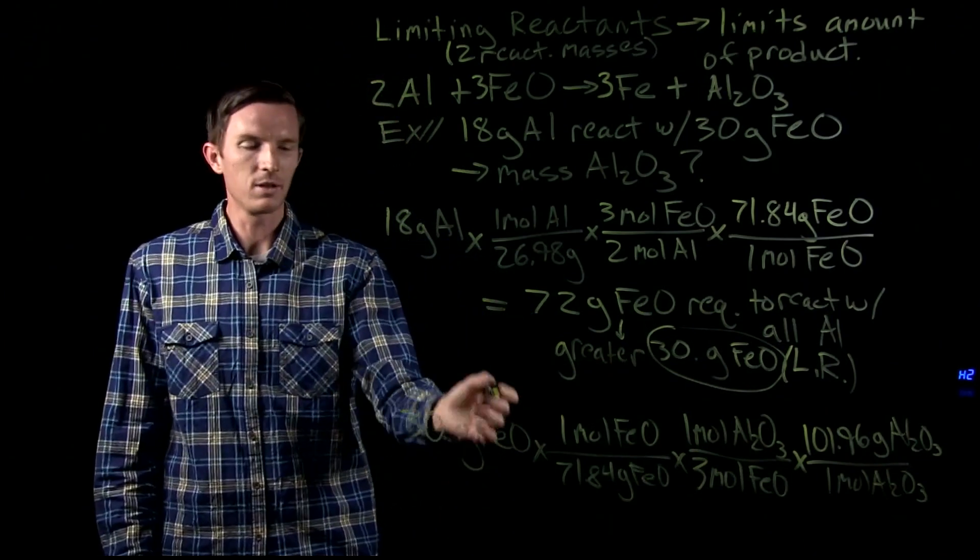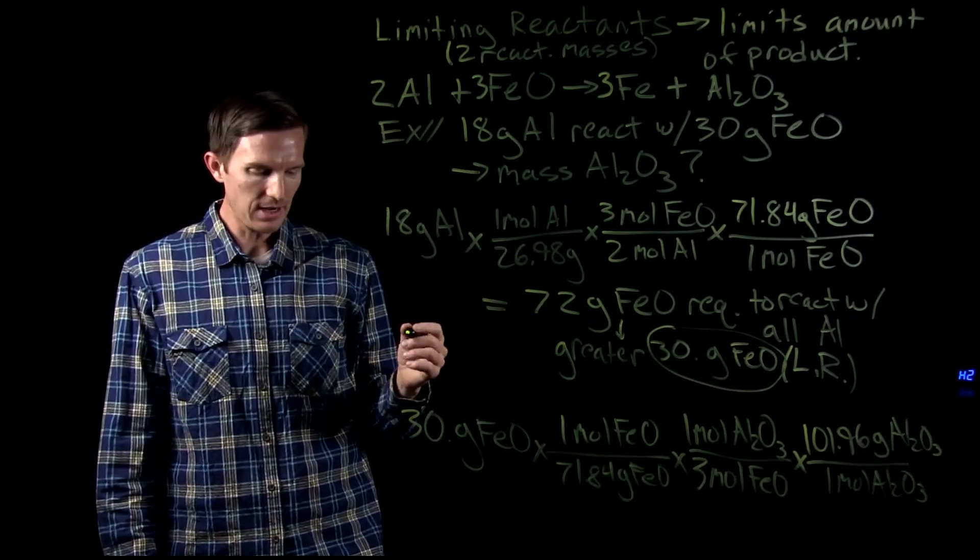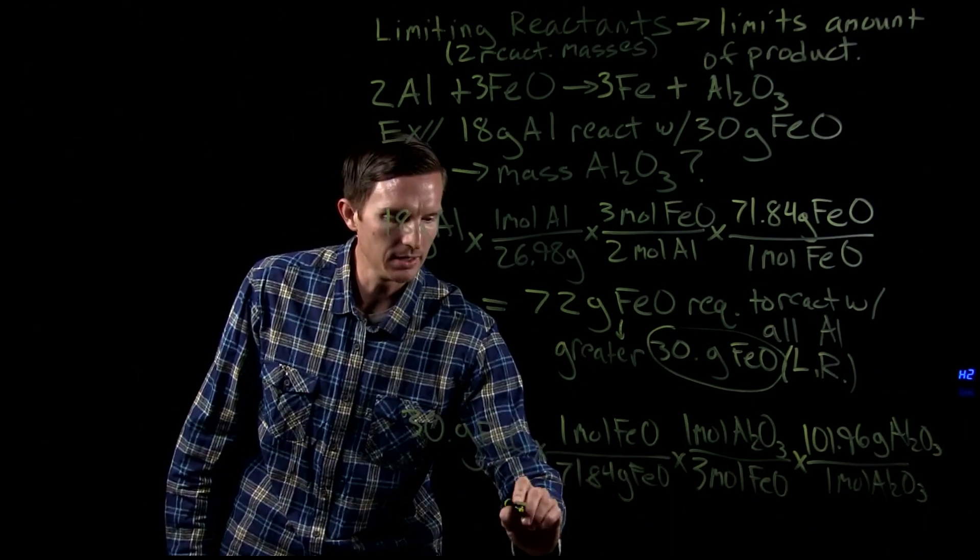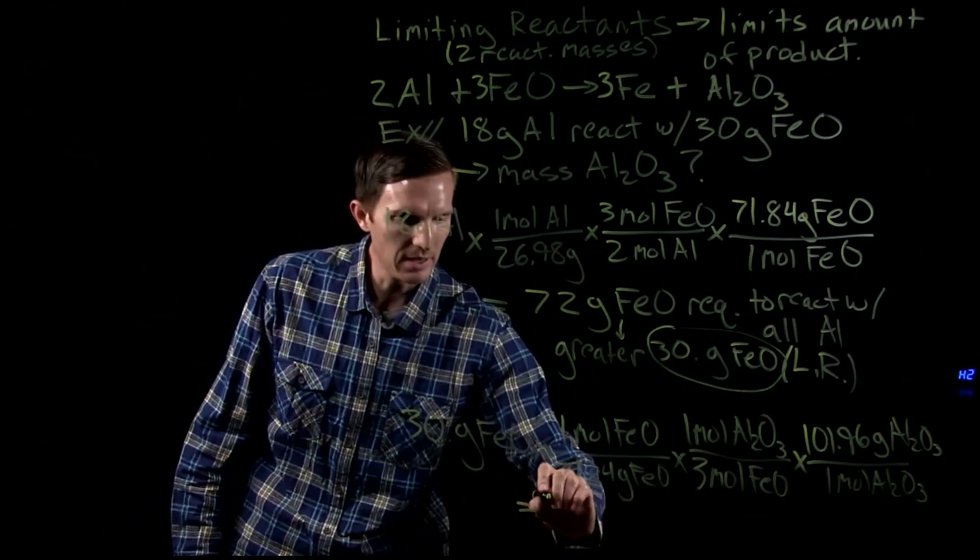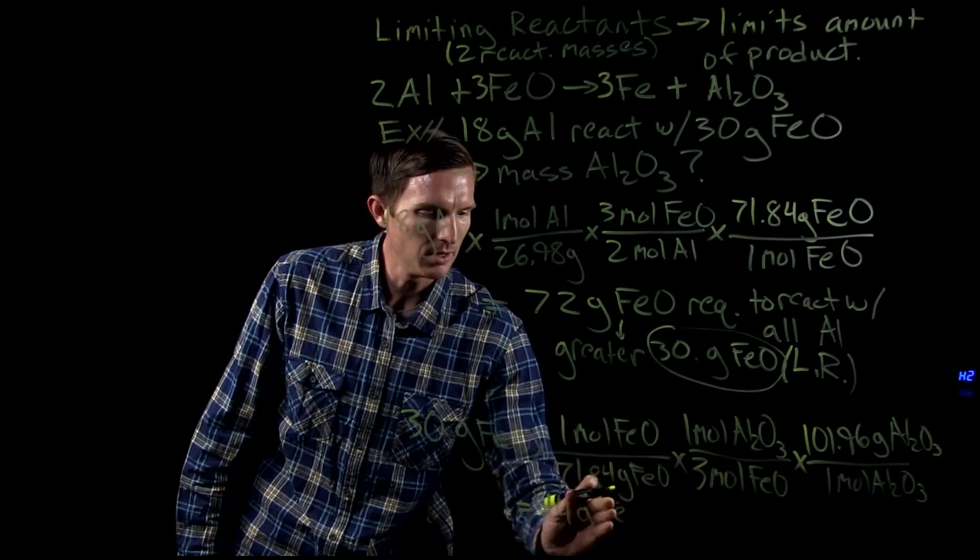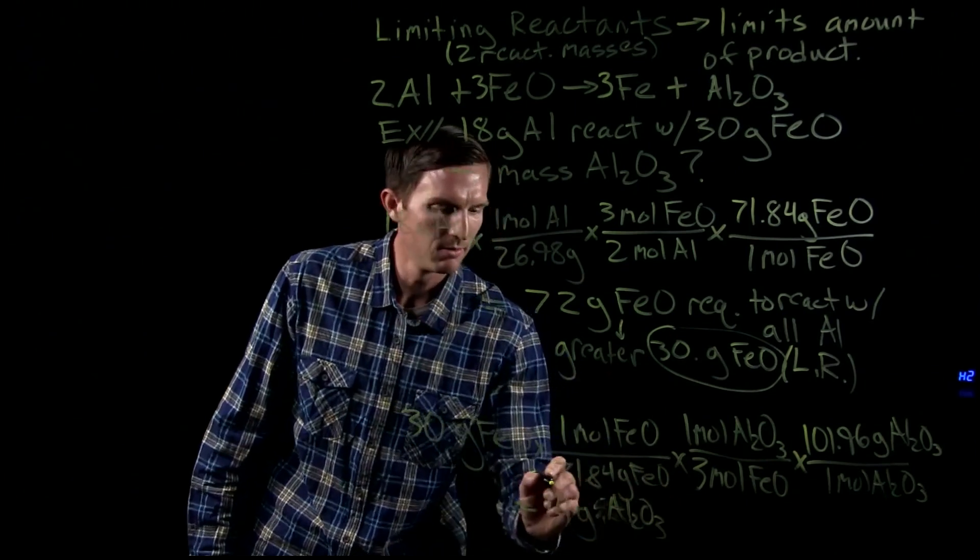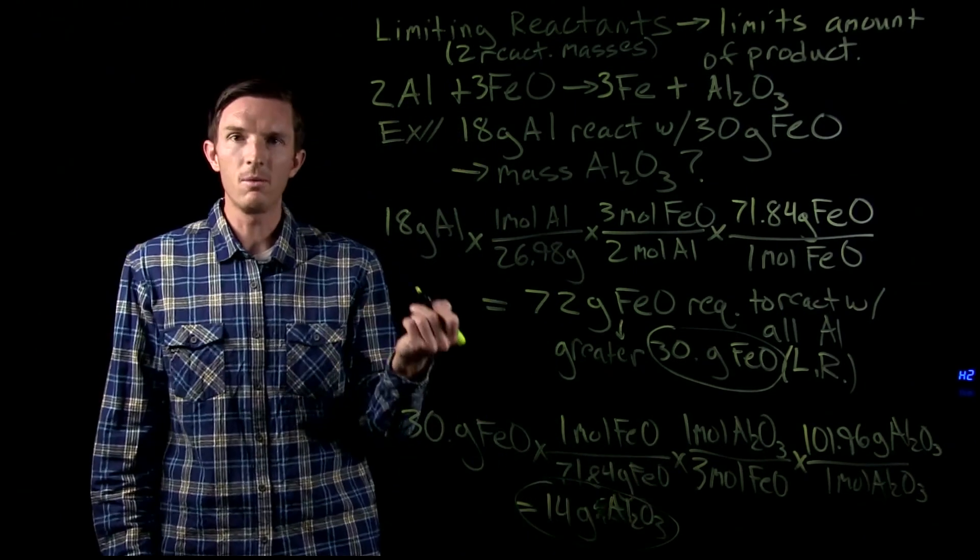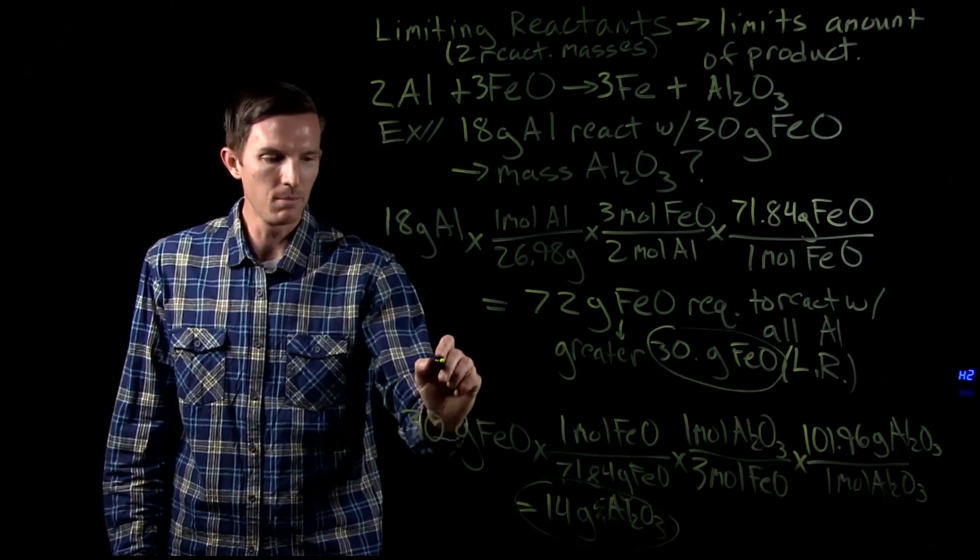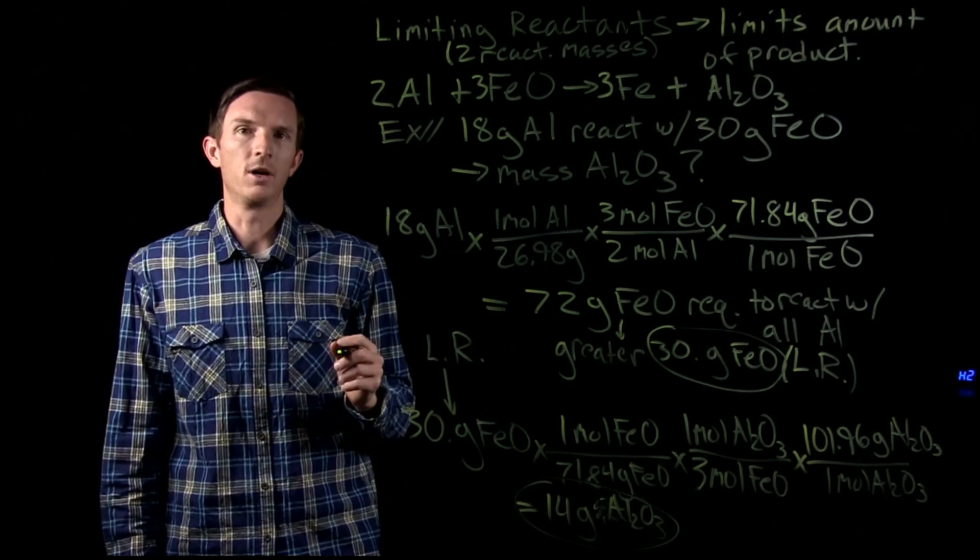So now we see we started with our limiting reactant, which was our 30 grams of our iron oxide, and we end up getting what we would see as 14 grams of our aluminum oxide formed from what we started with, from our limiting reactant of our iron oxide.